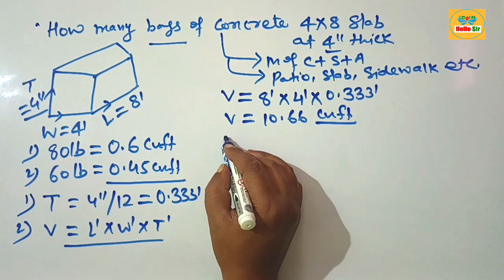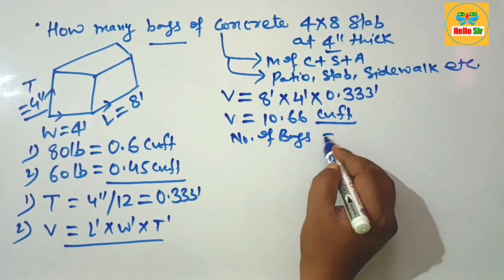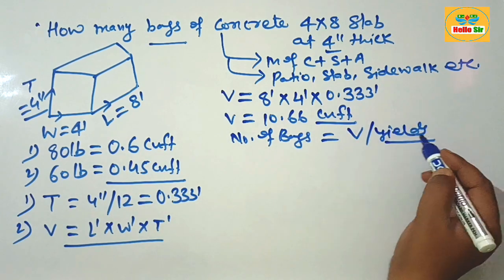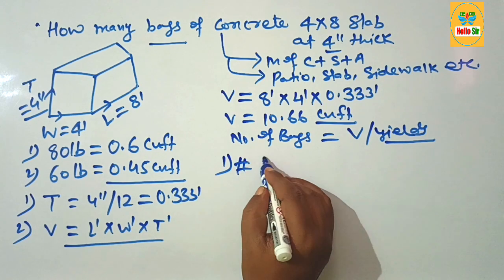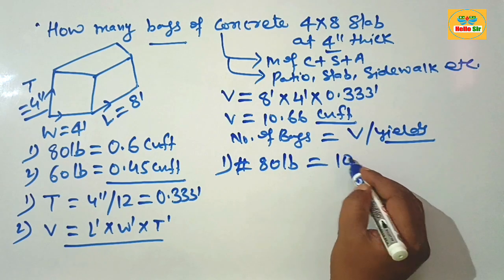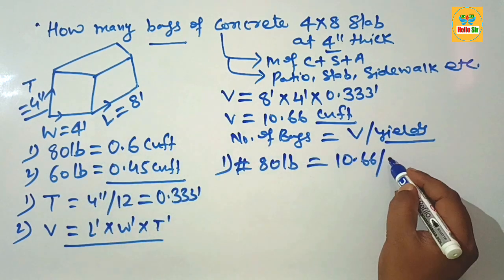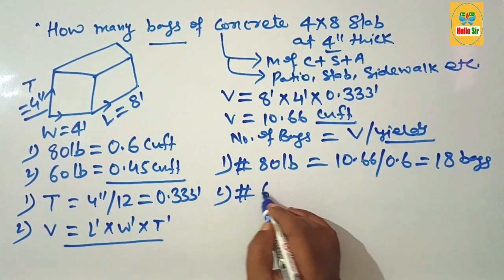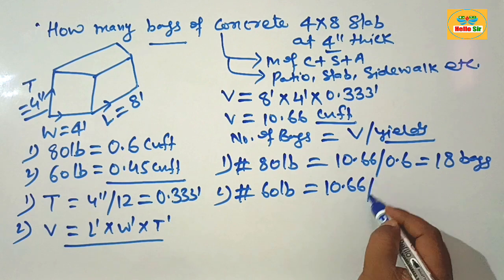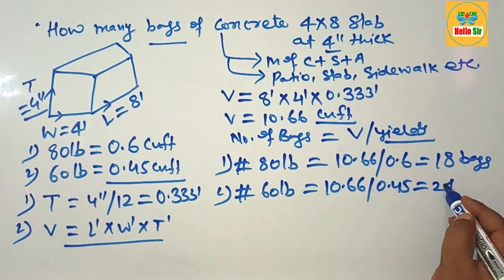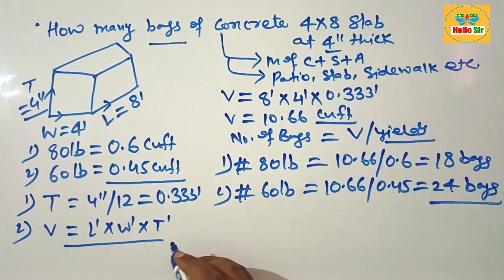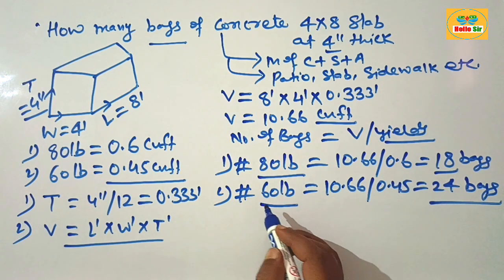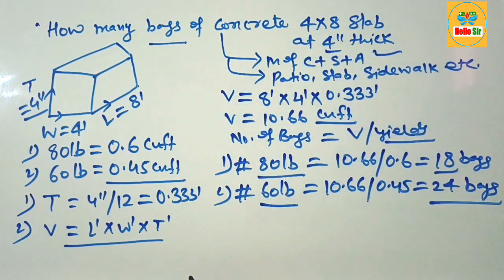The formula to calculate the number of bags of concrete is: divide the total concrete volume by the yield of one bag. For 80-pound bags: 10.66 ÷ 0.6 = 18 bags. For 60-pound bags: 10.66 ÷ 0.45 = 24 bags. So you need to buy 18 bags of 80-pound concrete or 24 bags of 60-pound concrete for a 4 by 8 slab at 4 inches thick.